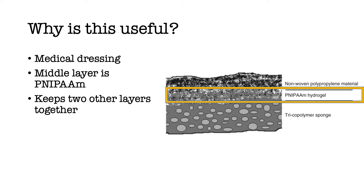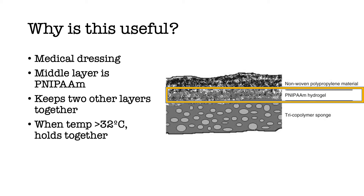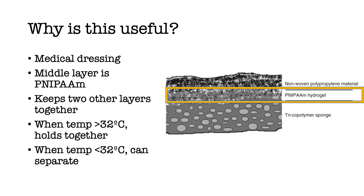If we think back to what we just learnt about the LCST of poly-N-isopropylacrylamide, we'll remember that above 32 degrees Celsius it was hydrophobic and repelled water. When a wound is in an inflamed state, meaning it's not yet healed, the skin temperature will be around 37 degrees Celsius. At this temperature, the hydrophobic poly-N-isopropylacrylamide acts as an adhesive and binds the two layers together. Once the wound has healed sufficiently, the skin temperature returns to around 31 degrees Celsius, which is below the LCST. Here, the poly-N-isopropylacrylamide is hydrophilic and therefore soluble, meaning it loses its adhesive properties and the upper layer can be peeled away from the bottom, leaving behind a skin graft of sorts.